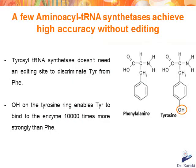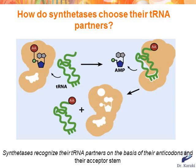The editing site is not present in all tRNA synthetases — it only exists when the enzyme needs an additional mechanism to distinguish between amino acids, as in the case of threonine tRNA synthetase. Some enzymes, like tyrosine tRNA synthetase, do not possess an editing site because they don't need it to discriminate tyrosine from phenylalanine. The OH on the tyrosine ring enables tyrosine to bind to the enzyme 10,000 times more strongly than phenylalanine.